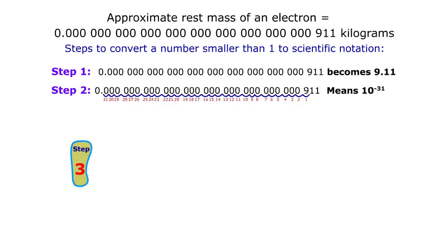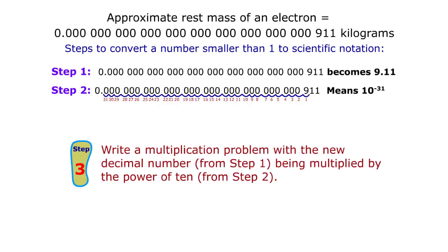Step 3: Write a multiplication problem with the new decimal number from step 1, being multiplied by the power of 10 from step 2. 9.11 from step 1, times 10 to the negative 31st power from step 2.